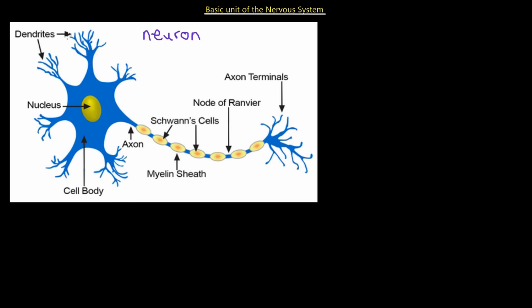The little projections around the cell body are called dendrites. They receive a signal either from another neuron or from the environment, depending on whether this is a sensory neuron, a motor neuron, or an interneuron. The dendrites receive responses and transmit electrical impulses. Each neuron has a nucleus. This looks like a motor neuron — meaning that it innervates muscle and innervates motion, which is why it's called a motor neuron.